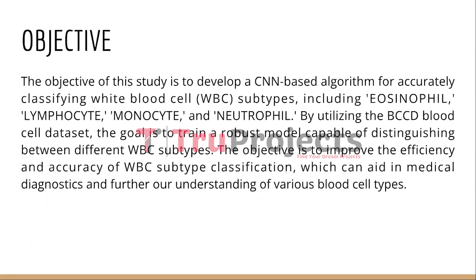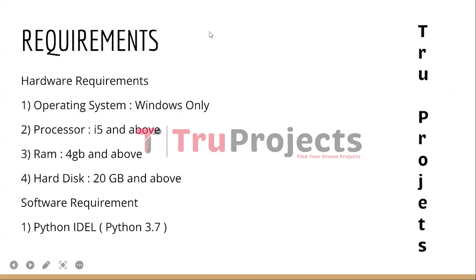The main objective of this project is to create a CNN algorithm that can effectively categorize different subtypes of white blood cells, such as eosinophil, monocyte, neutrophil, and lymphocyte. The study utilizes the BCCD blood cell dataset to train a reliable model that can accurately differentiate between various WBC types. The primary objective is to enhance the precision and effectiveness of WBC subtype classification, which can have valuable applications in medical diagnostics and contribute to our knowledge of different blood cell types.